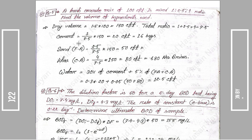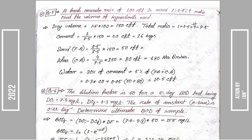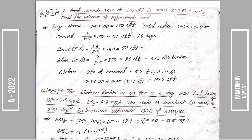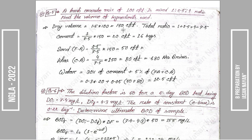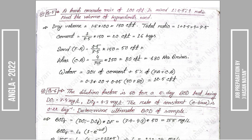Then we have cement. The first mix ratio is 1 by 7.5, multiplied by 150 CFT. For sand: the ratio is 2.5 by 7.5, multiplied by 150 CFT. For aggregate: the ratio is 4 by 7.5, multiplied by 150 CFT, giving us the respective volumes of each ingredient.